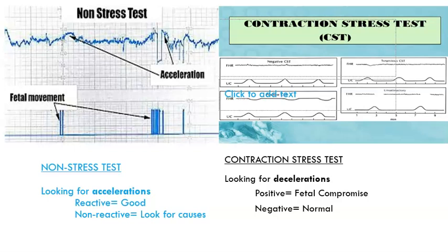For contraction stress tests, nipple stimulation is most commonly used to start contractions. Nipple stimulation releases natural oxytocin, which stimulates uterine contractions — the same hormone we give as a drug to stimulate contractions. When we discuss postpartum, we'll talk about how breastfeeding nipple stimulation releases oxytocin and helps prevent postpartum hemorrhage. So nipple stimulation will release some oxytocin and stimulate those contractions.